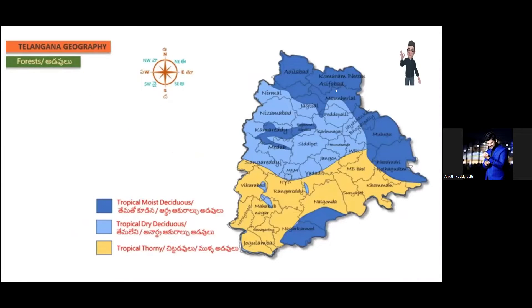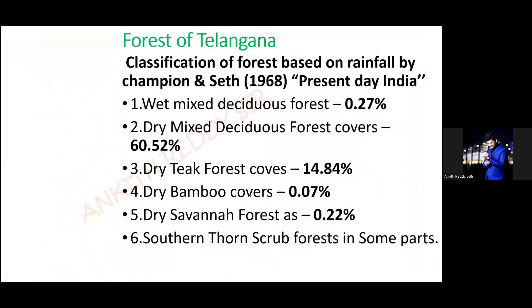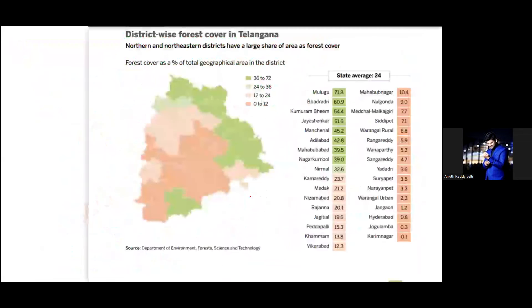Since the rainfall is more than 1000 mm or 100 centimeters, you can find moist deciduous. In the central part you find dry deciduous, and in the southern and western part you find the tropical thorn forest — different types of forests.